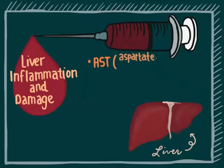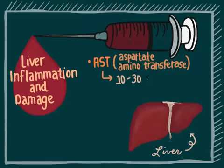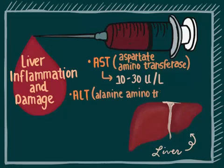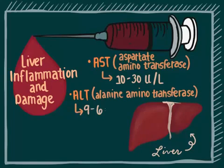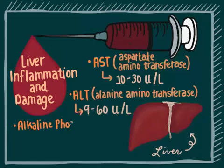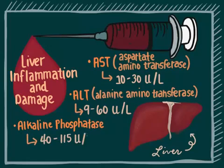AST or aspartate aminotransferase: normal range is 10 to 35 units per liter. ALT, alanine aminotransferase: normal range is 9 to 60 units per liter. Alkaline phosphatase: normal range is 40 to 115 units per liter.